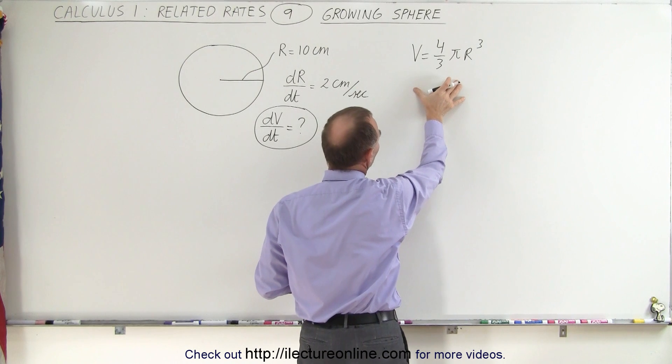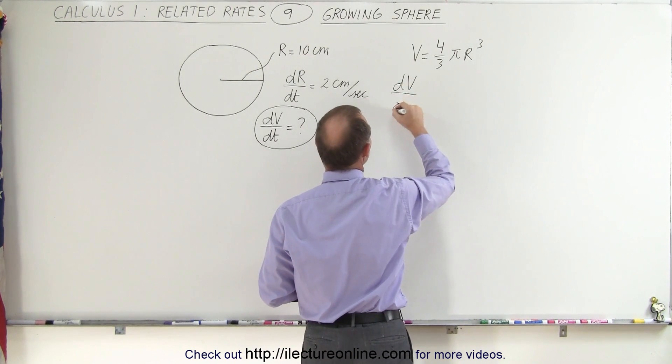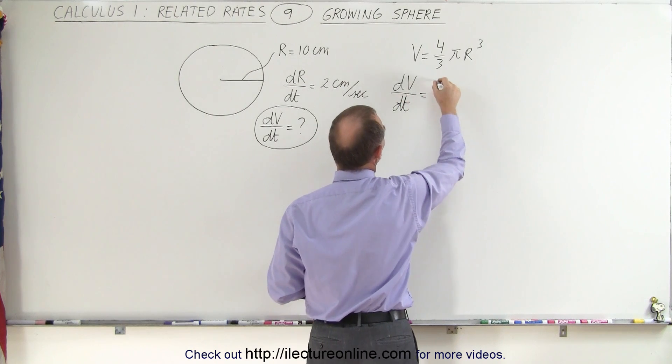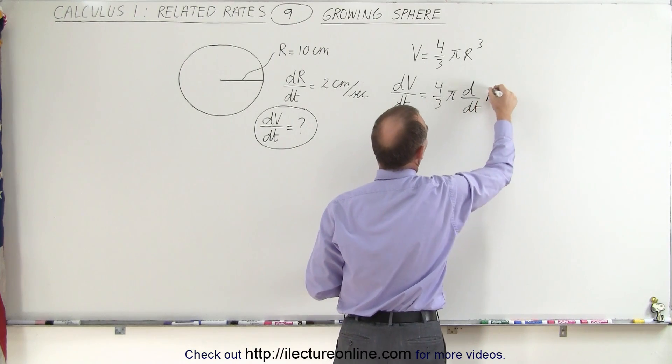So now we're going to take the derivative with respect to time of both sides, which gives us dV/dt is equal to 4 thirds pi times the d/dt of r cubed.